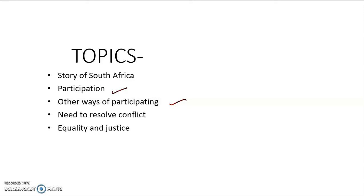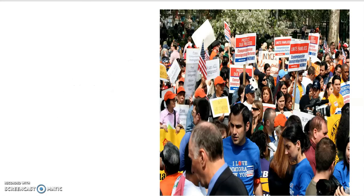But are there any other ways in which the people can also participate, apart from voting in the election year? Yes, people can participate in the working of the government by criticizing them. For example, in August 2005, the government increased the money that the people had to pay for electricity.